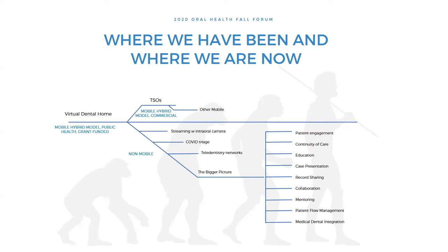His model — the mobile hybrid model — was mostly public health, not-for-profits, and grant-funded. We'd been talking about teledentistry for a long time but it was primarily this model. For those unfamiliar: it involves sending a hygienist or group of people out to community locations — schools, senior homes — with mobile equipment doing preventive services, gathering diagnostic information. Then the dentist asynchronously reads the records later, determining whether further treatment is needed, and the patient gets directed to a bricks-and-mortar office.